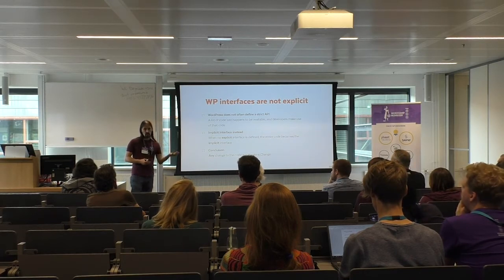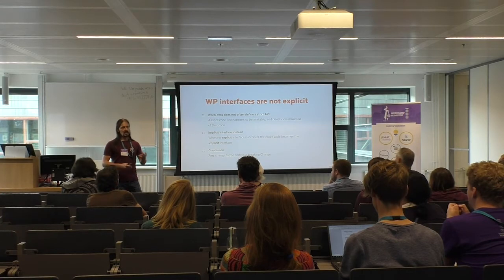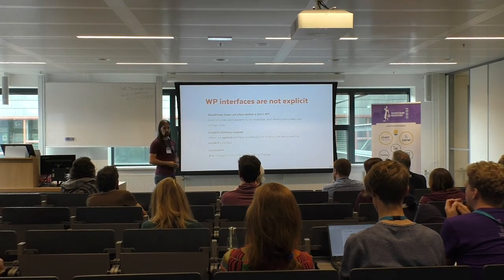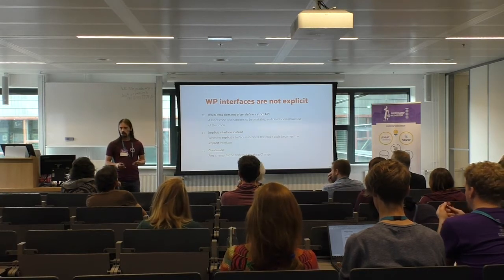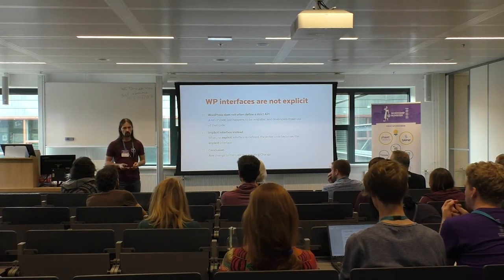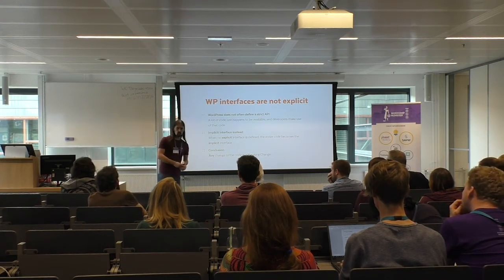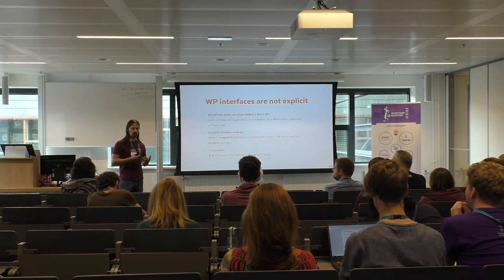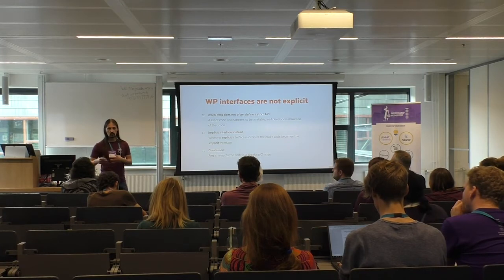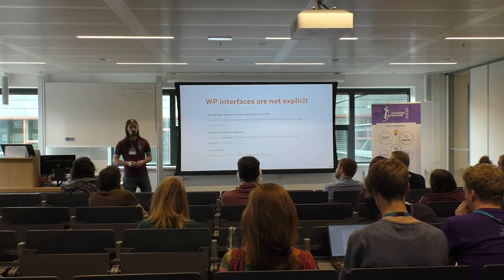If you have this implicit interface — meaning your entire code becomes the public interface — then any change to any part of that code is a breaking change. So saying that WordPress is backward compatible is actually technically wrong, because WordPress pretty much has breaking changes with almost every single commit. Of course, there's a difference between the technical reality and the practical effects — in general, these changes are close enough that everything still works, but technically speaking, almost every single commit would be a breaking change.